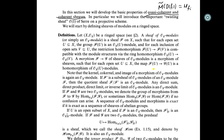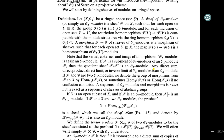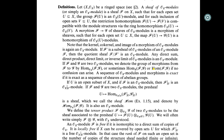A morphism from shift F to G — a morphism of O_X-modules — is a morphism of sheaves such that for each open set, the map of abelian groups is a homomorphism of O_X-modules. Note that the kernel, cokernel, and image of a homomorphism of O_X-modules is again an O_X-module.